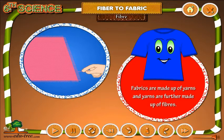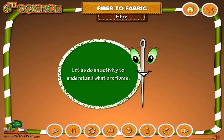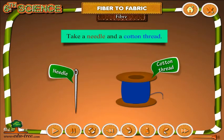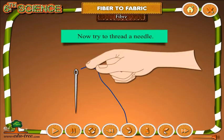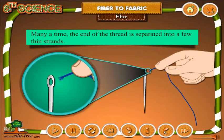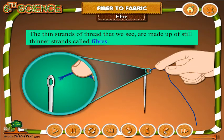Fiber fabrics are made up of yarns, and yarns are further made up of fibers. Let us do an activity to understand what fibers are. Take a needle and a cotton thread and try to thread the needle. Many times, the end of the thread separates into a few thin strands, making it difficult to pass the thread through the eye of the needle.